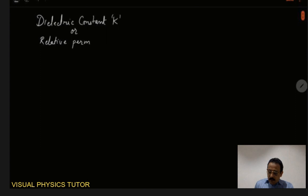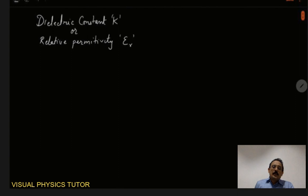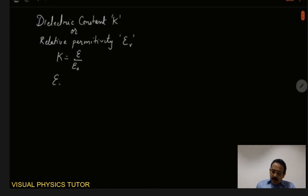Dielectric constant K, or relative permittivity epsilon r, is the ratio of permittivity of a medium to the permittivity of free space. So I can write here: K is equal to epsilon by epsilon naught, or equivalently, epsilon r is equal to epsilon by epsilon naught.